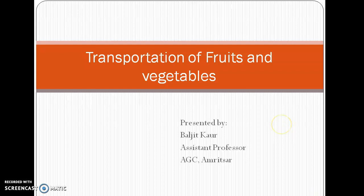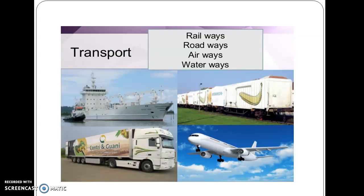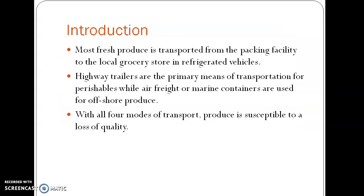After harvesting, fruits are packaged properly and transported to local groceries as well as to distant places. For local markets, highway trailers and railway trailers are used, but for offshore produce transportation, air freight and marine containers are used. The four transport systems are railways, roadways, airways, and waterways.